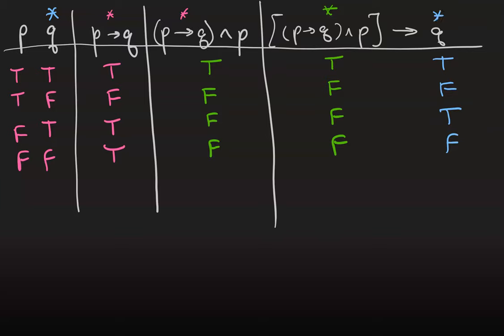So the only rows where the statement can possibly be false are the rows where the left-hand expression is true and the right-hand expression is false. But notice that that doesn't happen, right? We've got if true then true, which is true. We've got if false then anything is going to be true, so that's true, true, true.